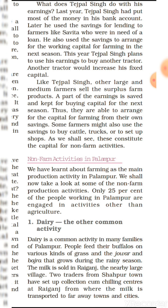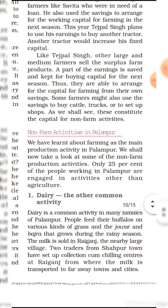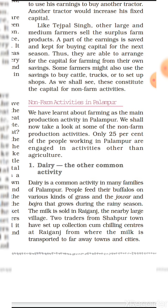Like Tejpal Singh, other large and medium farmers sell their surplus food crops in the market, earn extra income, and save it in the bank. They also purchase capital for production purposes, and are thus able to arrange capital for farming from their own savings. Some farmers might also use their savings to buy cattle, a truck, or to set up shops — this constitutes capital for non-farm activities.